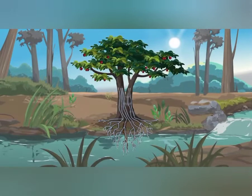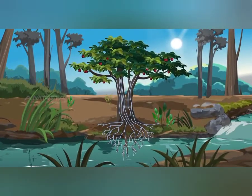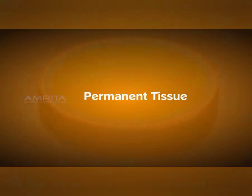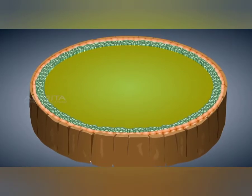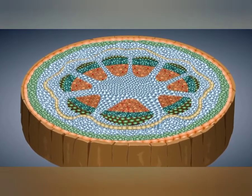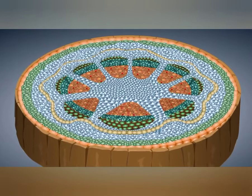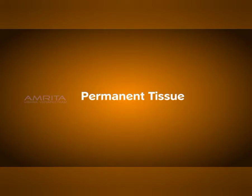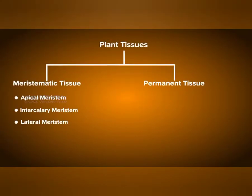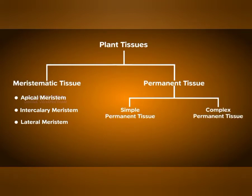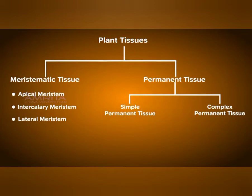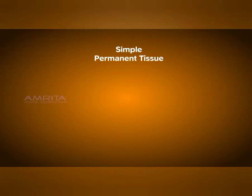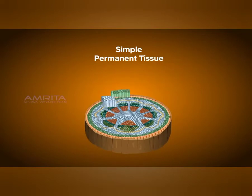So protective tissues include epidermis and peridermis. Coming to the next part, which is complex permanent tissues. Before talking about complex permanent tissues, let me also remind you about the simple permanent tissues. The supportive simple permanent tissues including parenchyma, colenchyma and sclerenchyma are the most important parts of the plant. They are present in all the parts of the plant and have different functions.